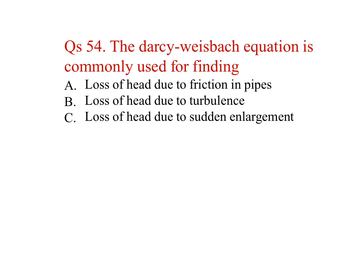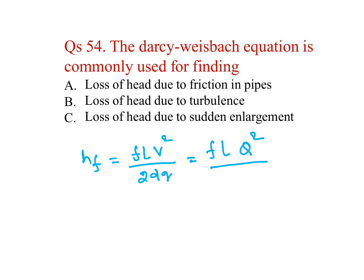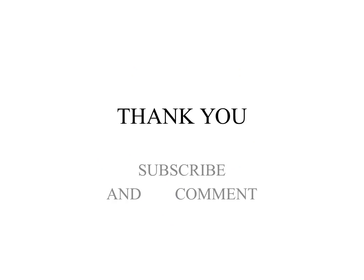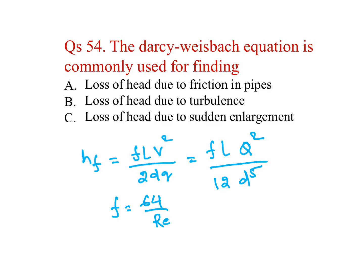The Darcy-Weisbach equation is commonly used for finding head loss due to friction, given by h_f = fLV² / (2gD), which can also be written as fLQ² / (2gD⁵). Here, the friction coefficient f = 64 / Re for laminar flow. The answer is loss of head due to friction in a pipe.